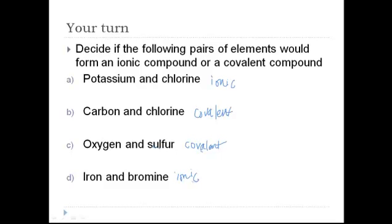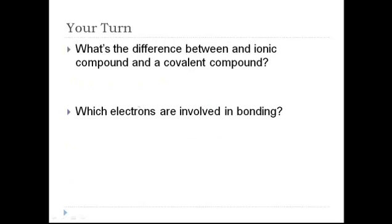A couple more questions: what's the difference between an ionic compound and a covalent compound, and which electrons are involved in bonding? In ionic compounds, electrons are transferred — that's the key word — from one atom to another, and those atoms become ions with opposite charges that attract each other. In a covalent compound, pairs of electrons are shared between nonmetals. And which electrons are involved in bonding? Just the valence shell electrons. So now you are able to describe covalent bonding, make predictions about which pairs of elements make covalent bonds, and model covalent bonding by drawing pictures.